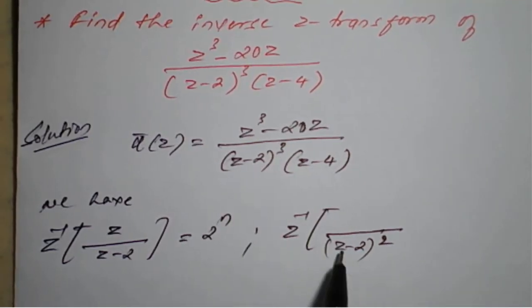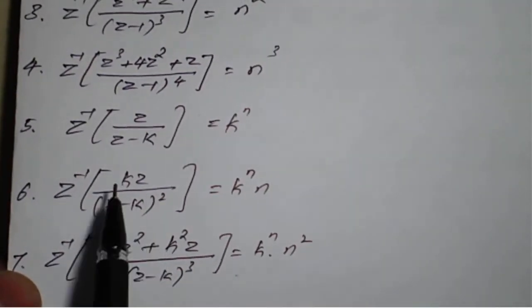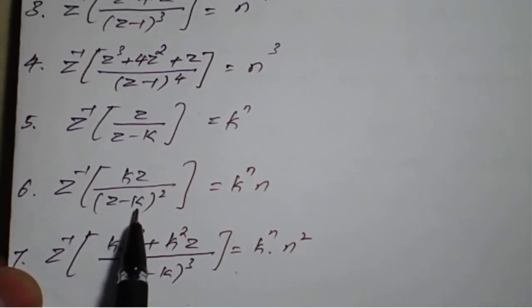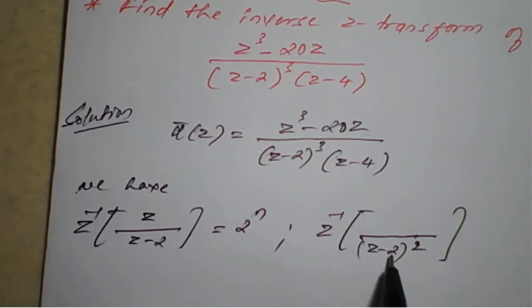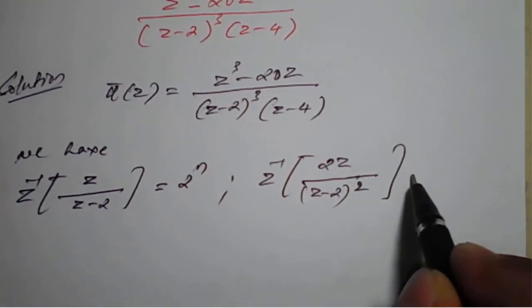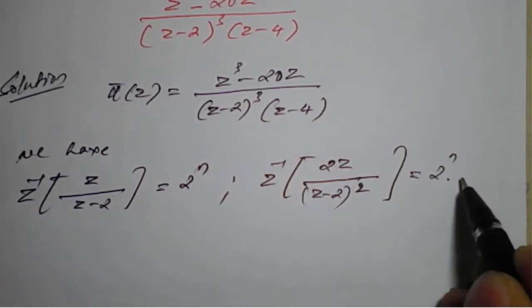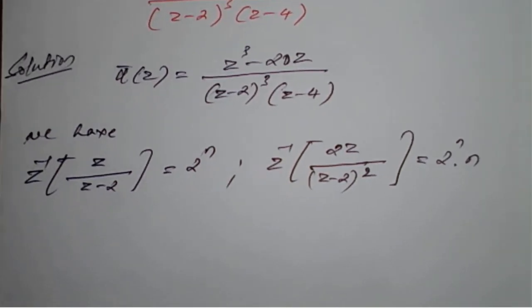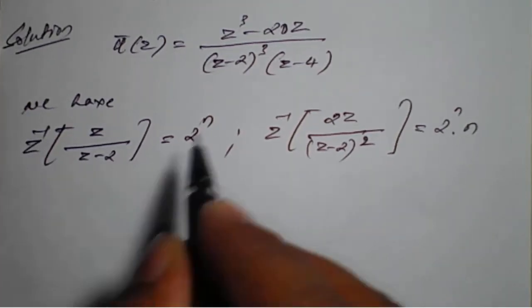For (Z-2)², referring to the formula: (Z-K)² has numerator KZ. Here K=2, so numerator becomes 2Z, and the resultant is 2ⁿ · n. Because for Kⁿ · n it follows from the standard formula. Similarly for (Z-2)³.